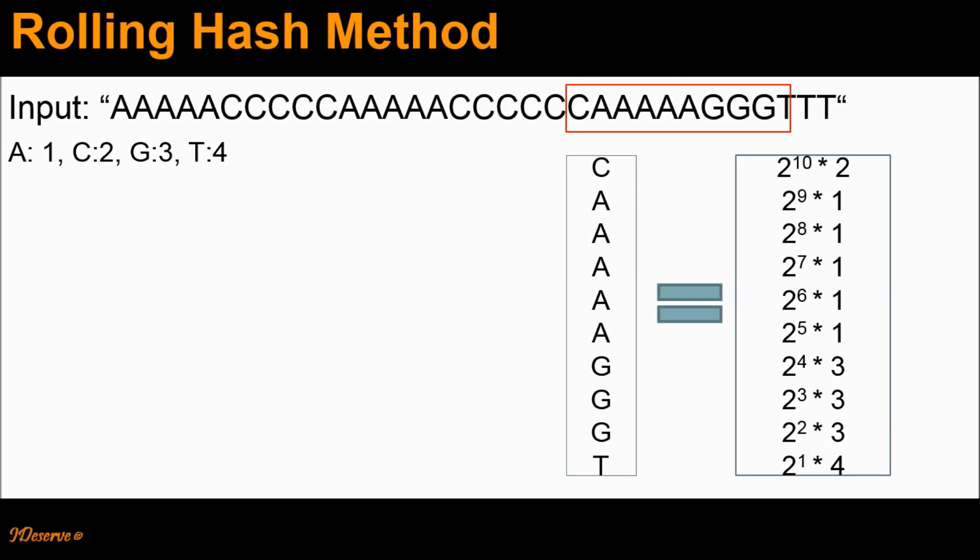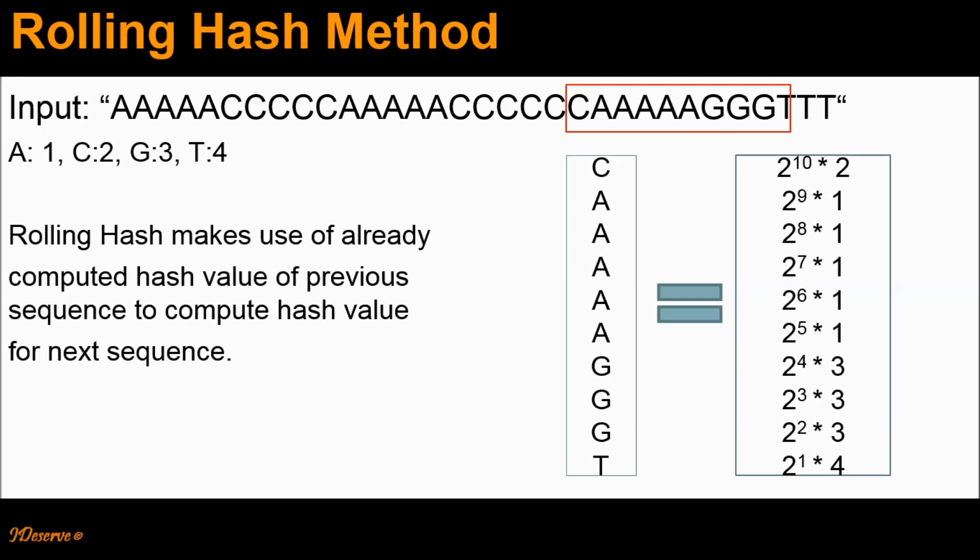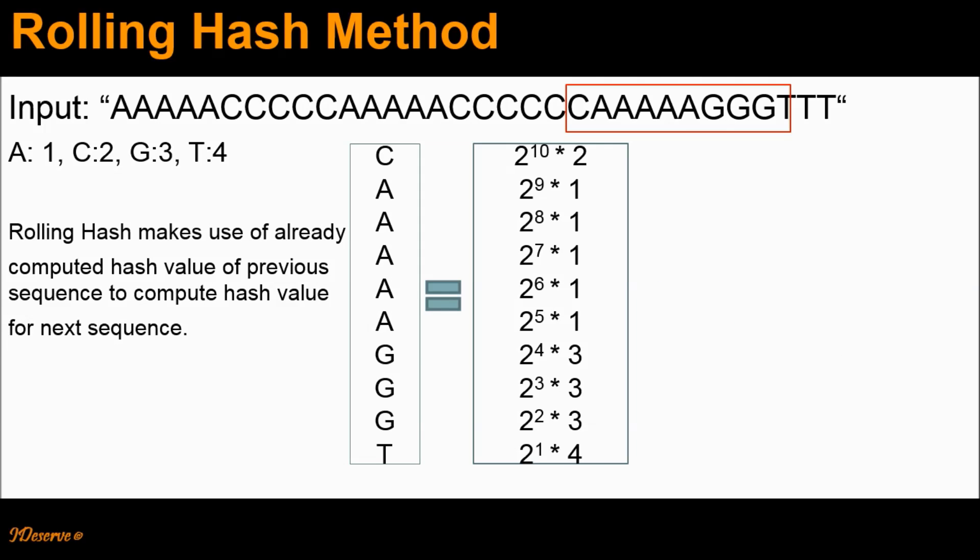We add all the remaining values in the same manner to compute the final hash value for this sequence. Therefore, the final hash value would be 2^10 × 2 + 2^9 × 1 + ... + 2^1 × 4. So the method we just discussed computes the hash value for a given sequence. But then what is the rolling hash method? Let's continue with the same example to understand this.